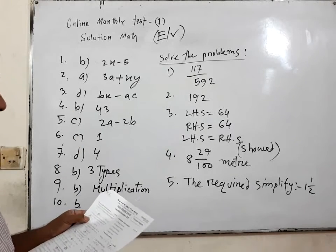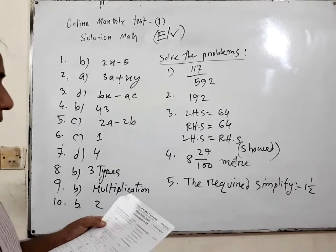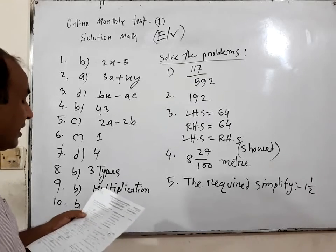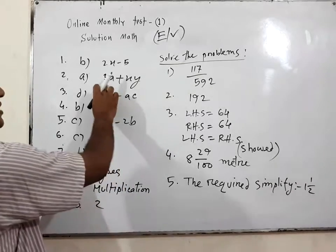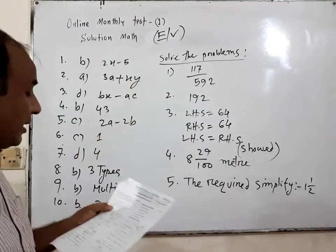Number 2. Which one will be the sum of 3 times of a with y times of x? That means 3a plus xy.